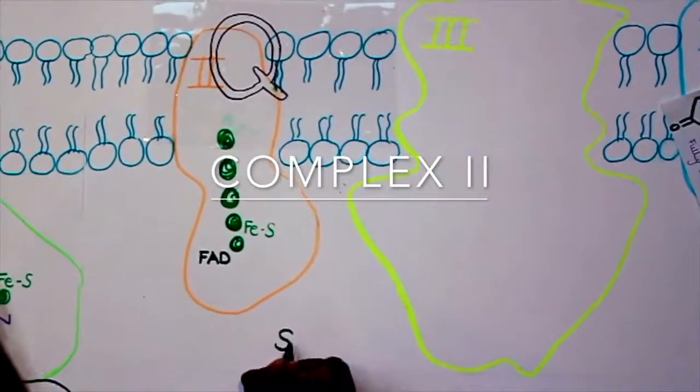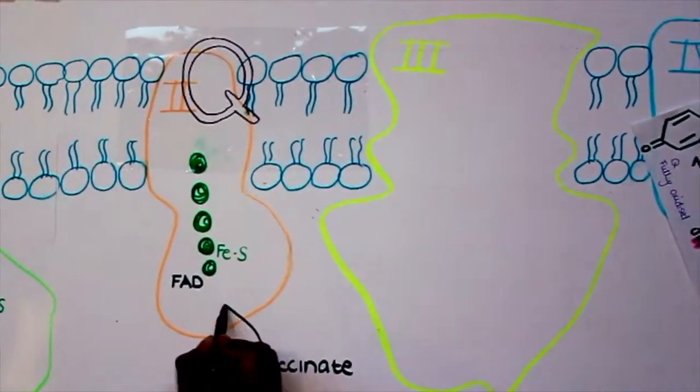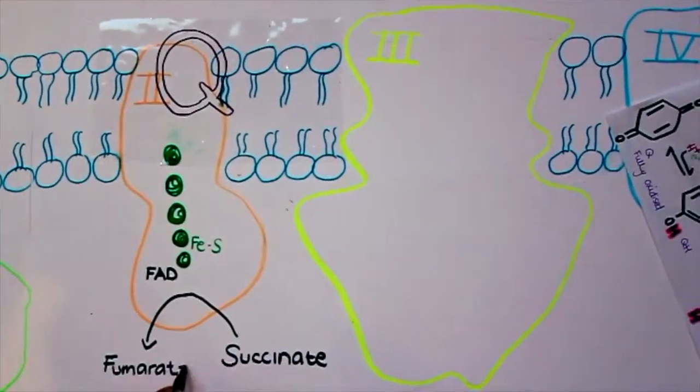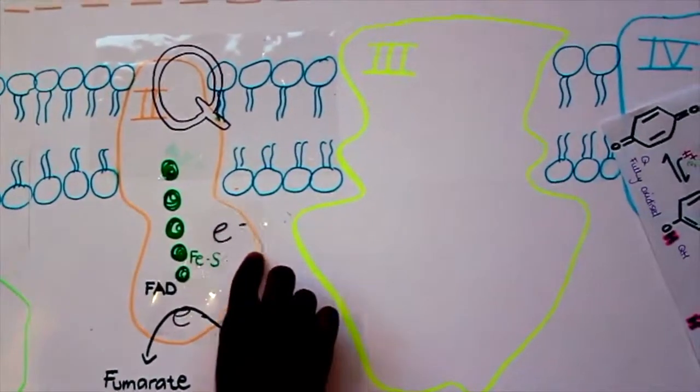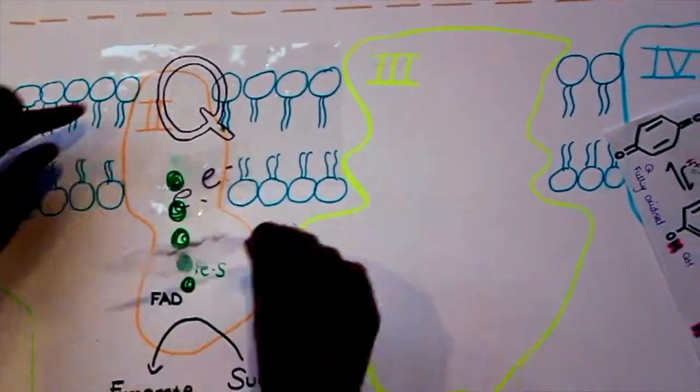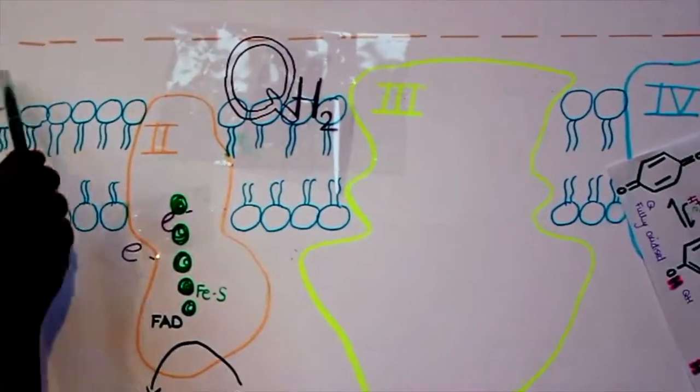Complex 2, or succinate dehydrogenase, is an enzyme from the Krebs cycle. Succinate will bind to a binding site and will be transformed into fumarate. 2 electrons will be passed to FAD. The iron-sulfur center will pass 2 electrons to Q one at a time, forming QH2. This time, no electrons will be pumped out!